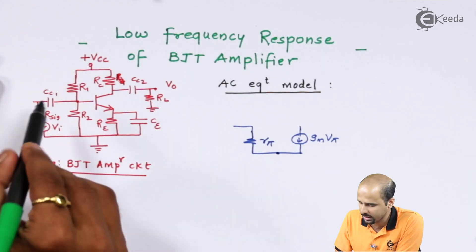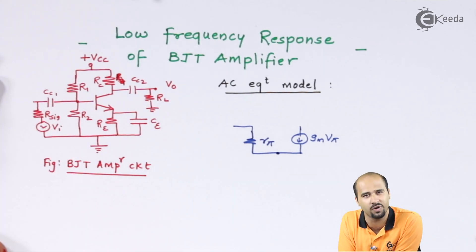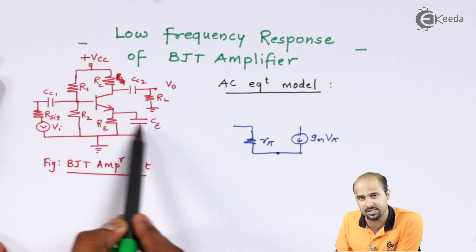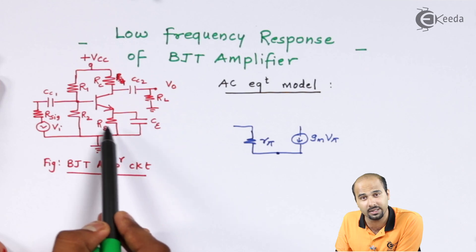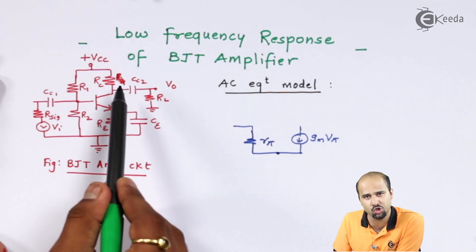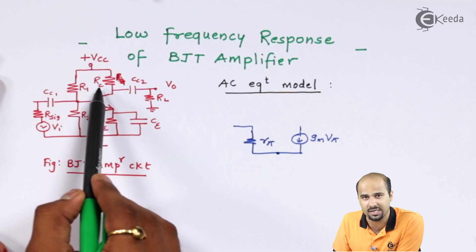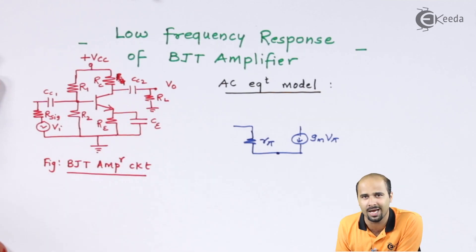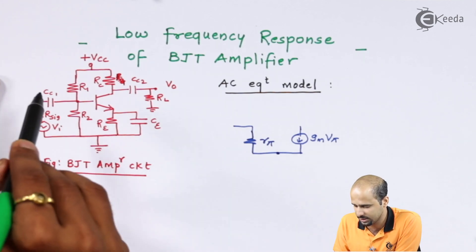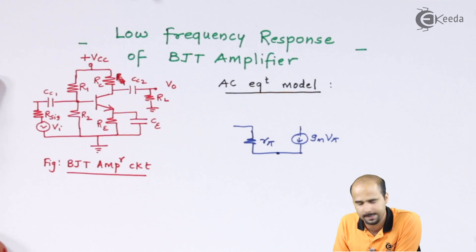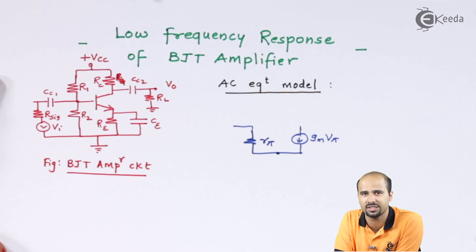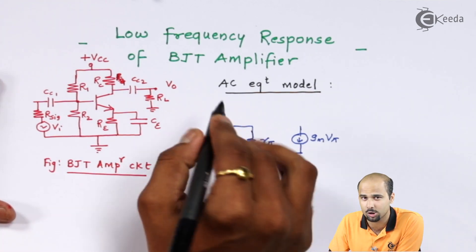Looking at this particular circuit, we will get to know that this capacitor and these two resistances form a first RC circuit at the input side. The second RC circuit we will get by taking the resistance looking from the capacitor side — that gives another RC circuit using the emitter resistor and emitter bypass capacitor. At the output side, RC connected to ground and RL also connected to ground forms a third RC network. In all these RC networks, C is in series and R is in shunt — this is the type of low frequency analysis, and here we have to calculate the value of FL.